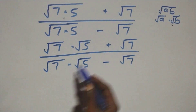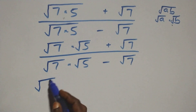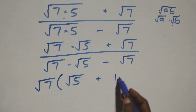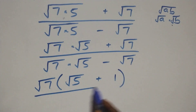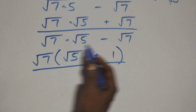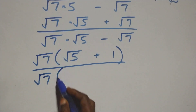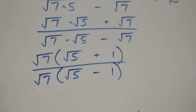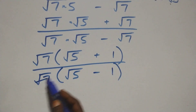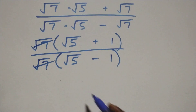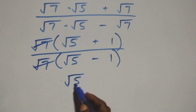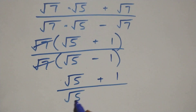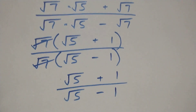Here we have root 7 as a common factor, so we factor it out: root 7 into bracket (root 5 plus 1), divided by root 7 into bracket (root 5 minus 1). Then root 7 cancels with root 7, and what we have left becomes (root 5 plus 1) divided by (root 5 minus 1).